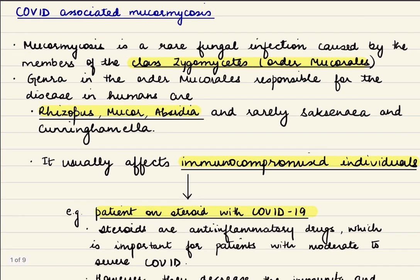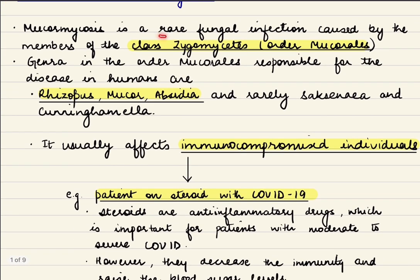So what is this mucormycosis? It is a rare fungal infection caused by members of the class Zygomycetes of the order Mucorales. Genera in this order which lead to this infection are Rhizopus and Mucor mainly, but can also be caused by Absidia and rarely by Saksenaea and Cunninghamella.